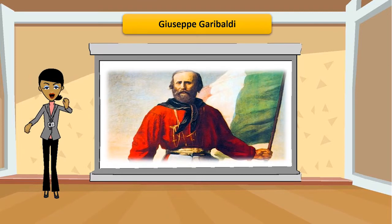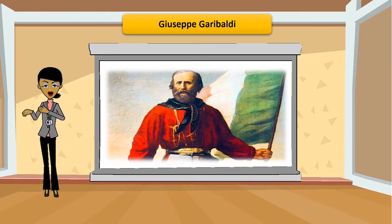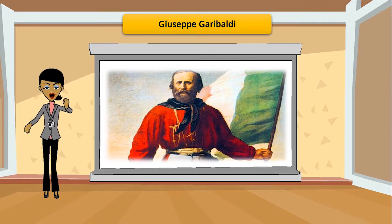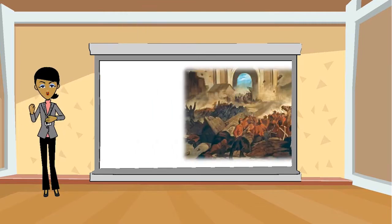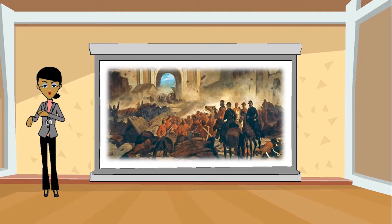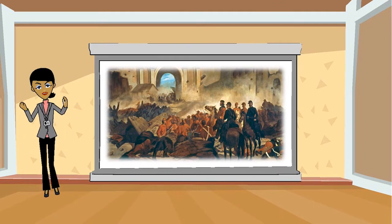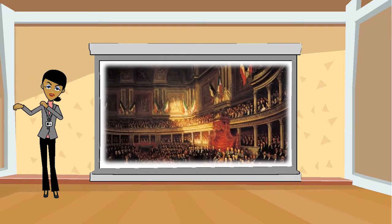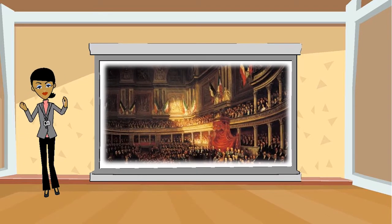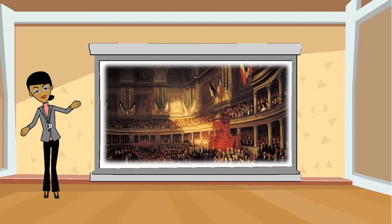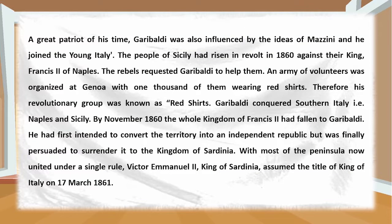Garibaldi was a great patriot of his time, also influenced by the ideas of Mazzini, and he joined Young Italy. The people of Sicily had risen in revolt in 1860 against their king, Francis II of Naples. The rebels requested Garibaldi to help them. An army of volunteers was organized at Genoa, with one thousand of them wearing red shirts — therefore his revolutionary group was known as the Red Shirts.